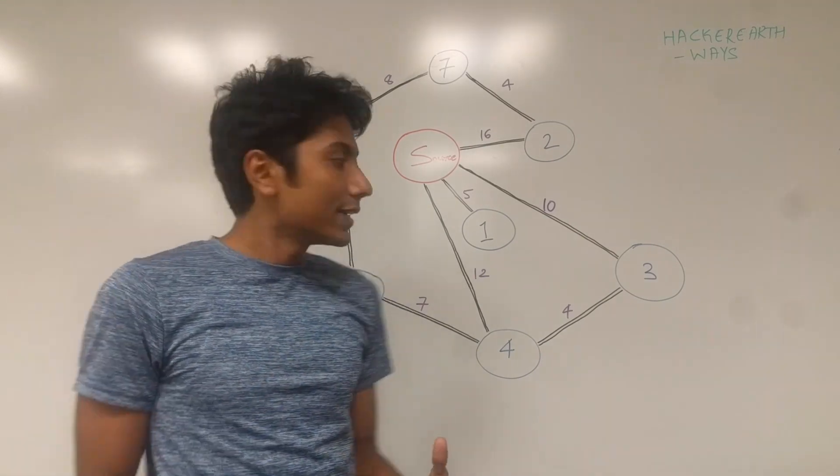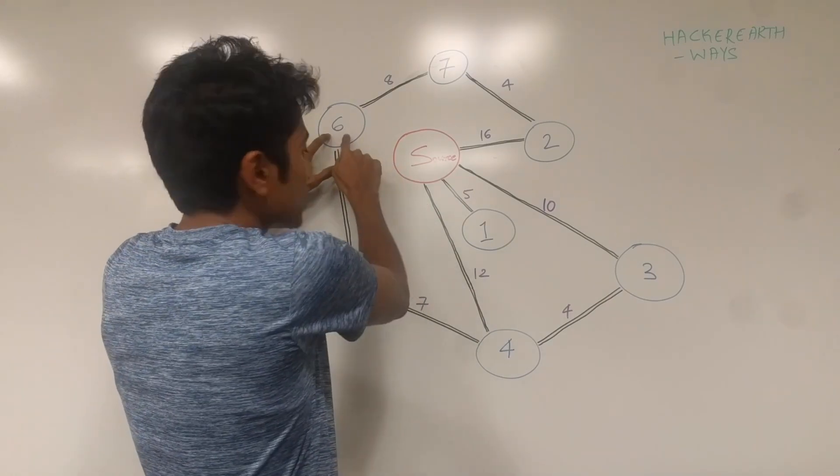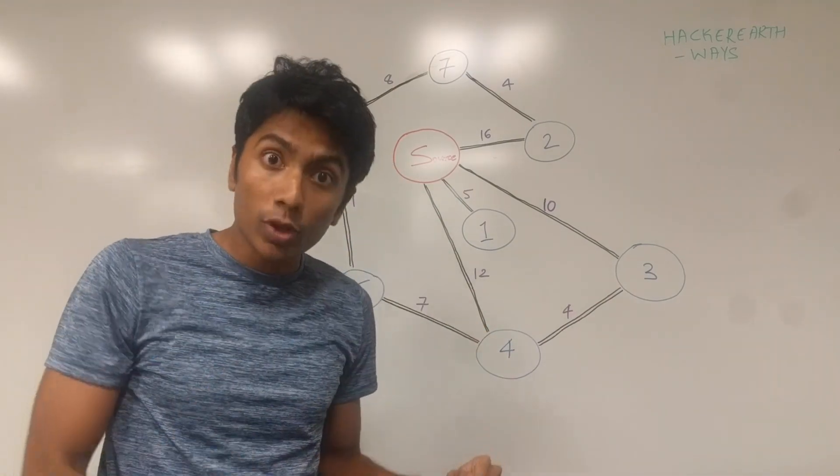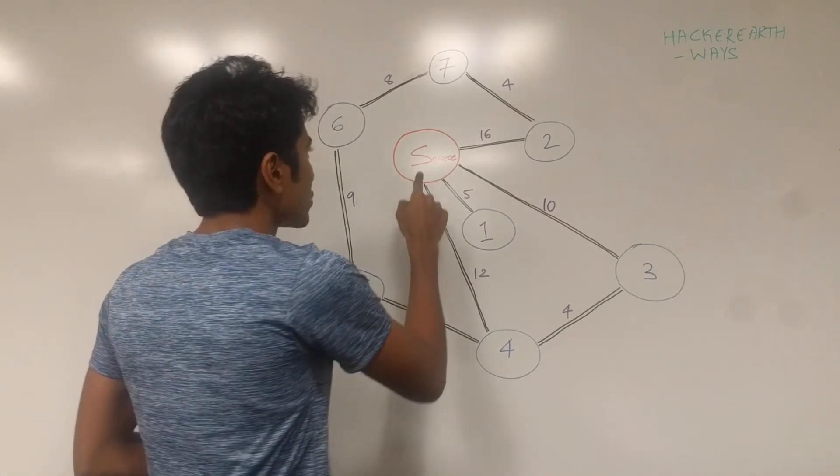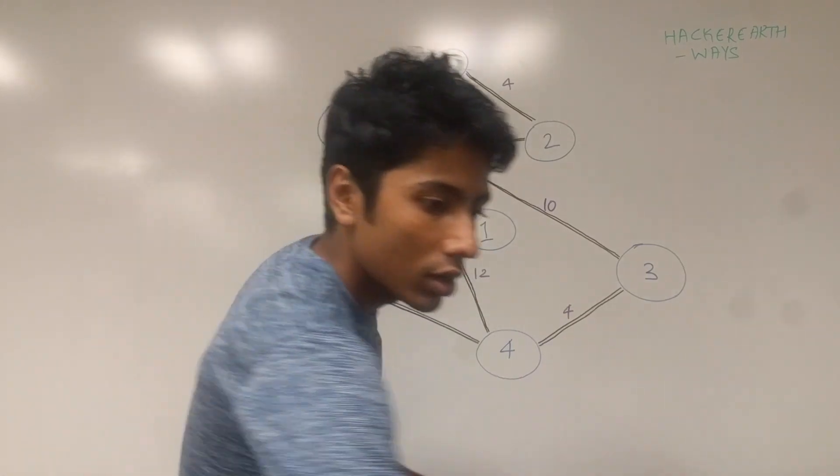What I mean by that is look at the node 6. From source to get to 6 there are two shortest possible ways. Which is from source you get to 4 that adds 12 to your count.